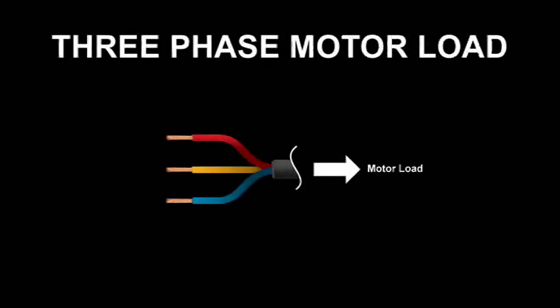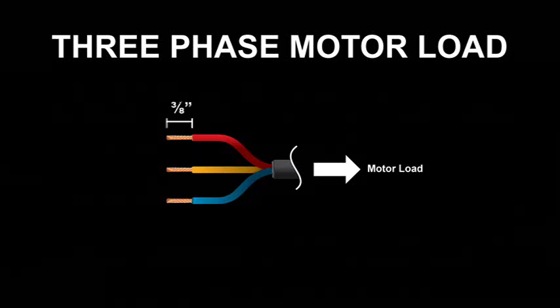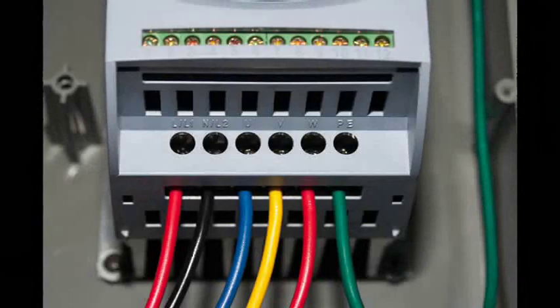The order here is not important. Just like the single phase, you'll want to strip about 3/8 of an inch of insulation off the end of each wire and insert each one into the terminals on the bottom of the unit marked U, V, and W, and tighten the screws securely.